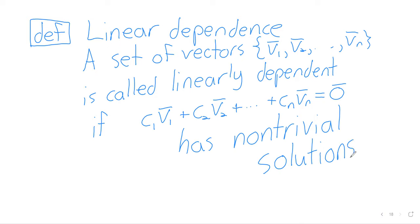Once you've defined linear dependence, the idea of linear independence is pretty immediate. If a set of vectors is not dependent, it must be independent.